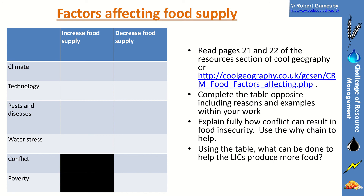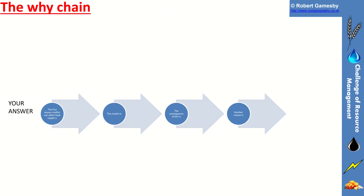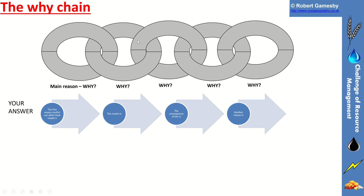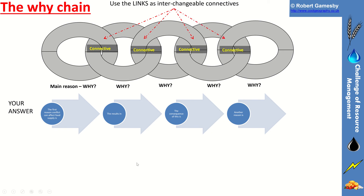Making sure people have enough food to eat is a basic human right. The Y-chain works like this — think about conflict as a chain where everything is linked together. You put connectives in where the links touch, and that gives you a really good answer. Your answer can go on a flow chart: the first reason conflict can affect food supply goes in the arrow, 'this results in' goes in the next arrow, then the consequence goes in the next arrow, and so on.